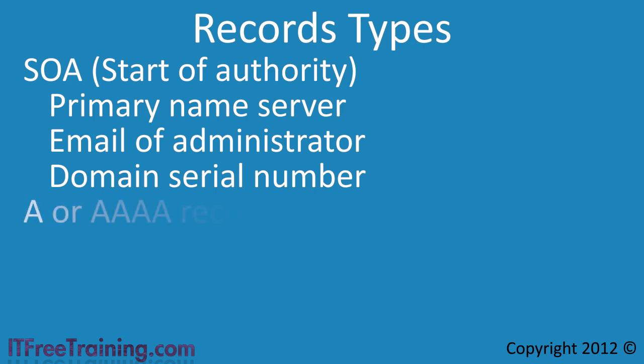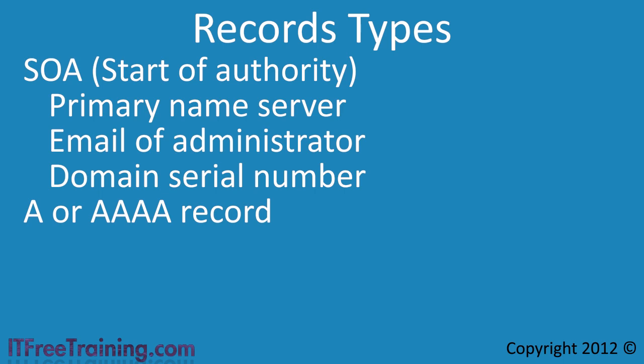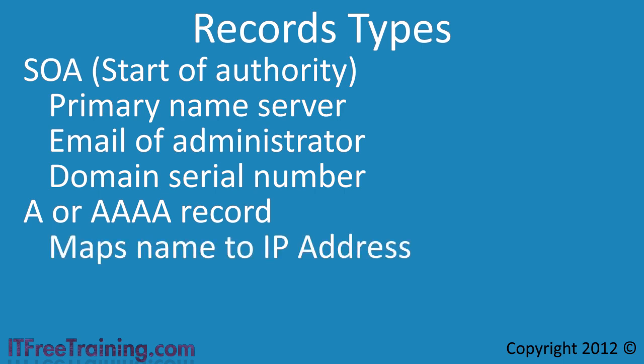The next most common record is the A or Quad-A record. This record maps a name to an IP address. The A record is used for IP version 4 addresses while the Quad-A record is used for IP version 6 addresses. For each computer or device on your network you can create an A or Quad-A record. If you have dynamic updates on, the record will be created automatically for you.